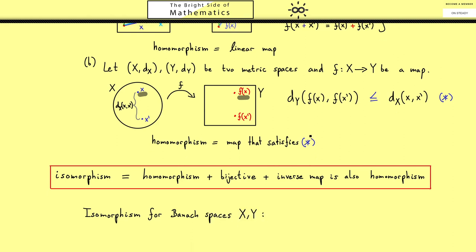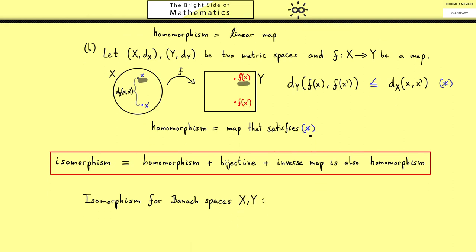For this case there comes in a lot of confusion because a Banach space is of course also a vector space. So when you say isomorphism you could just mean a normal vector space isomorphism. In other words, a linear bijective map.